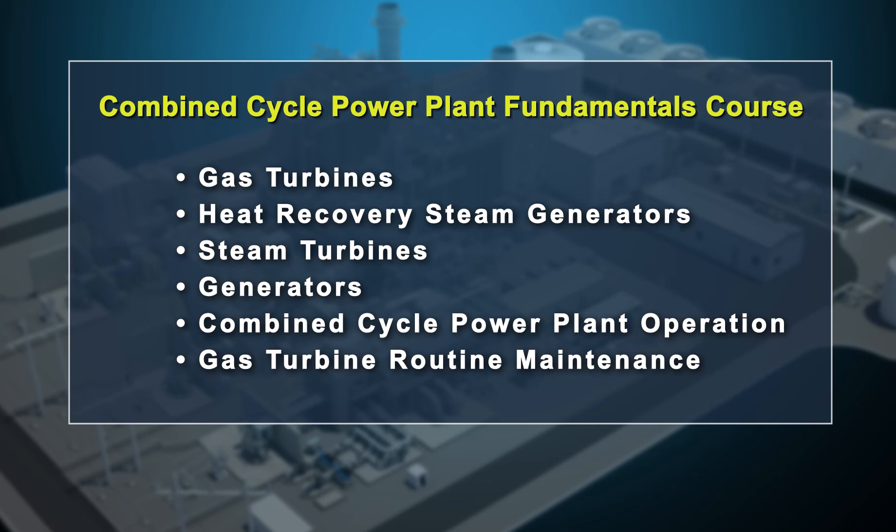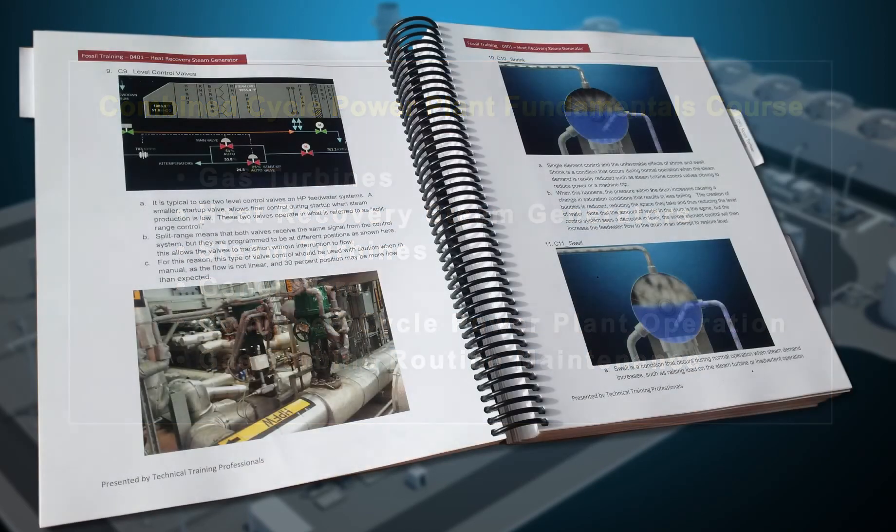TTP's 37-chapter Power Plant Fundamentals course provides trainees a solid base from which to build their operating experience. This course is available with classroom training and an illustrated manual.